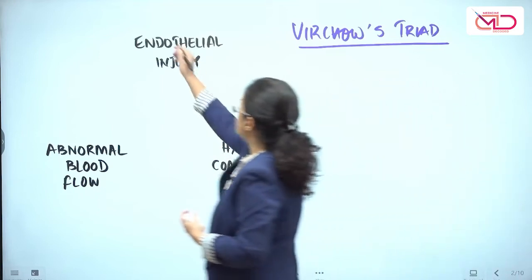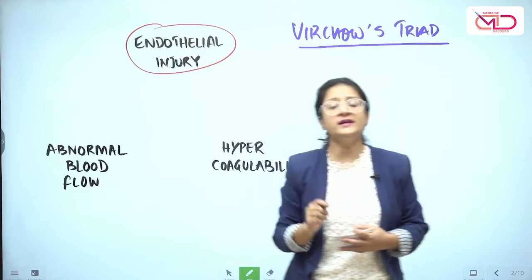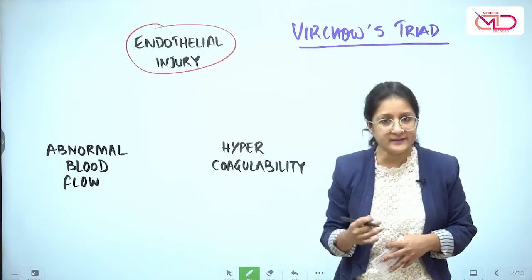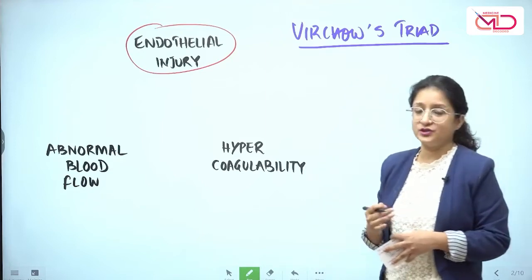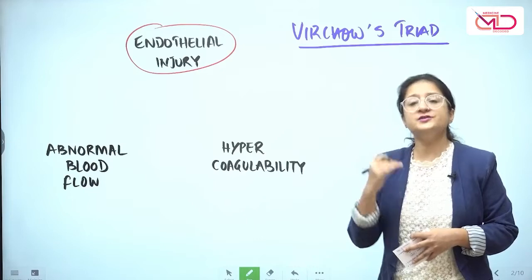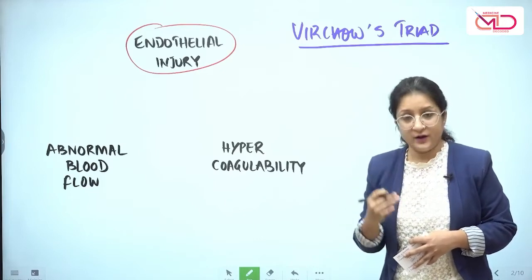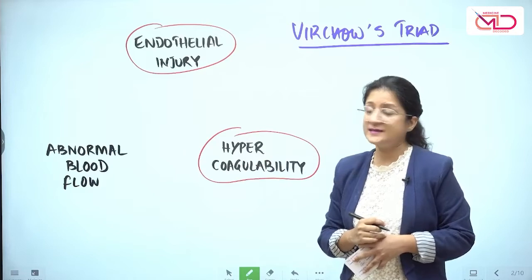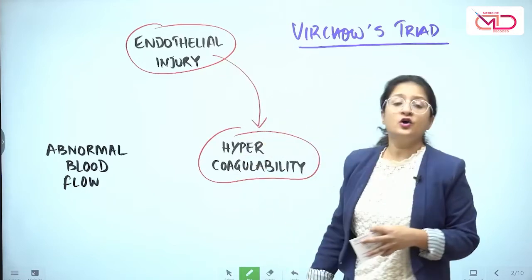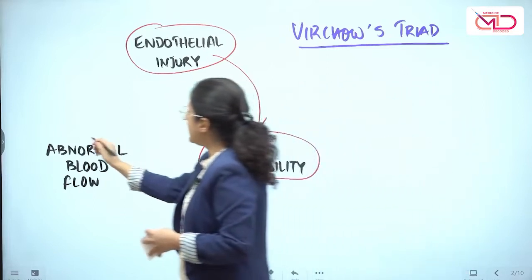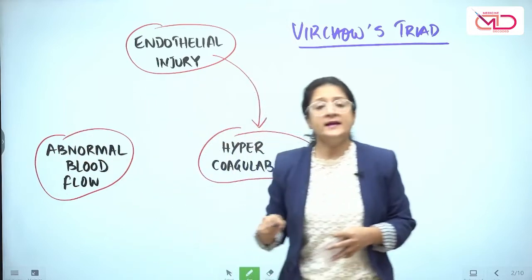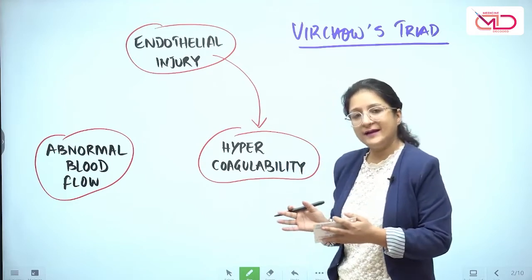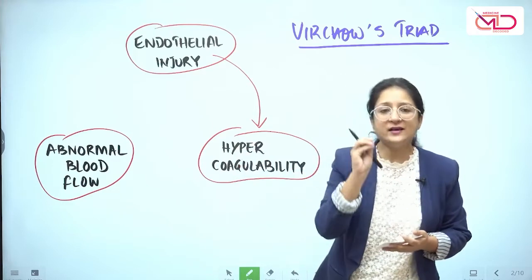Virchow's triad consists of three things. The first and foremost is endothelial injury. The endothelium is the lining of the blood vessels. Whenever the lining of the blood vessels is injured, it triggers a cascade of events which ultimately culminates in thrombus formation. For that thrombus to form, the coagulation system of the body is activated. Whenever there is excess coagulation, that is hypercoagulability, it will lead to excess thrombus formation.